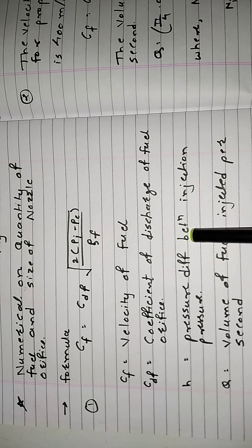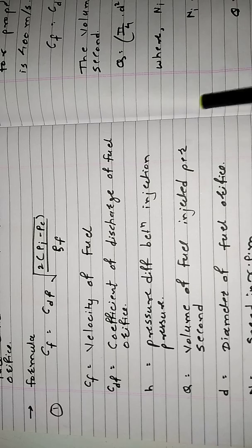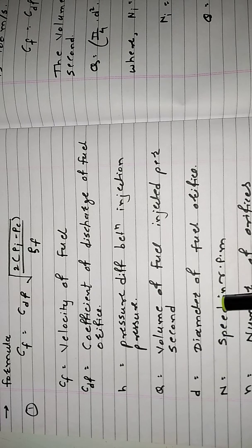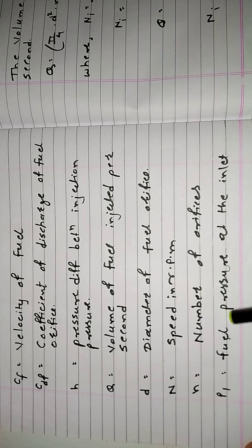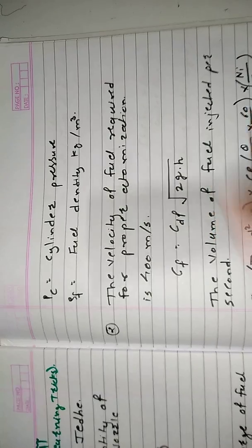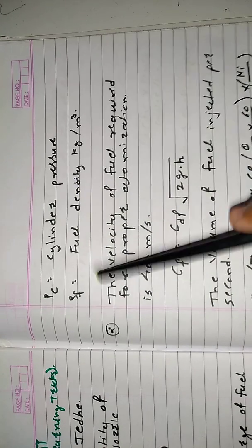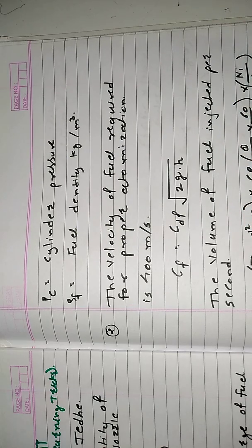PI minus PC represents the pressure difference between injection pressure and cylinder pressure. Q is the volume of fuel injected per second. D is the diameter of the fuel orifice, N is the speed in RPM, and small n is the number of orifices. PI is fuel pressure at the inlet, PC is pressure at the cylinder, and rho F means fuel density in kg per meter cube.